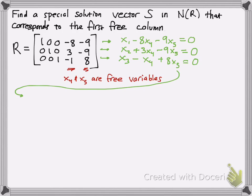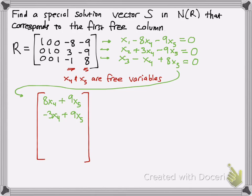Now let's solve for x1, x2, and x3. All you're going to do is move everything to the opposite side. I'm going to put this in vector form, which can represent all the possible solutions for each x1, x2, x3, x4, and x5 you choose. So x1 follows this form — you add 8·x4 to both sides, add 9·x5 to both sides. Same thing for the other equations: you manipulate them to solve for x2 and x3.